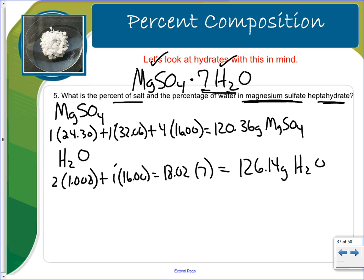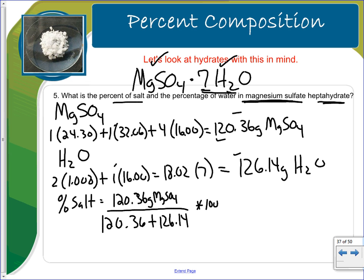So how do you do the percent salt? Take the amount that is salt, which is this part. It's going to be the mass of the salt, which is 120.36 over the total mass, which is this and that. So 120.36 plus 126.14 times 100. And I get this to be 48.83. With the percentages, we carry them out two decimal places by standard.